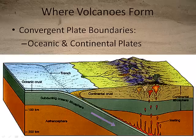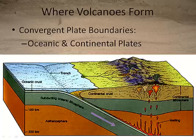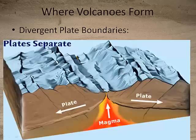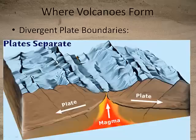Where do volcanoes form? When we talked about plate tectonics, we learned that anywhere there's subduction, you're going to get volcanoes. Subduction occurs wherever oceanic and continental plates converge on each other, and also when you have a convergent plate boundary involving two oceanic plates. We also get volcanic activity at mid-ocean ridges and in rift valleys on land, so divergent plate boundaries are areas where volcanoes form.